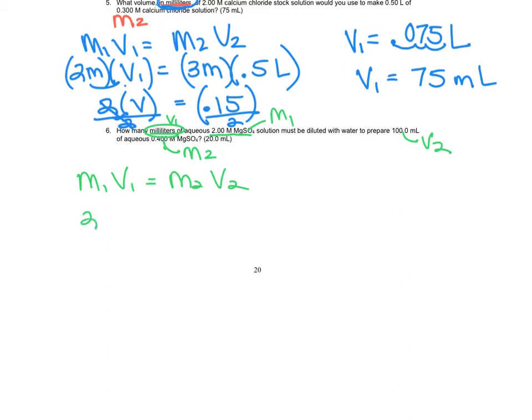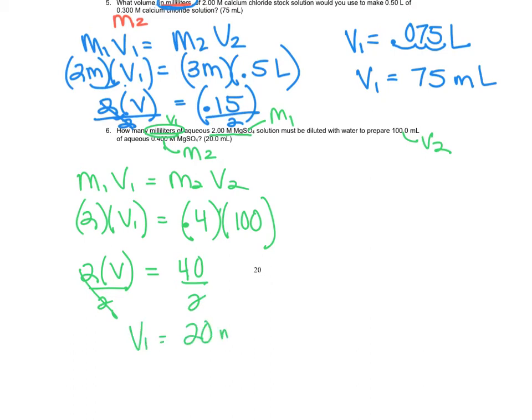Our equation is always M1V1 equals M2V2, and now we plug and chug. Molarity one is two, volume is what we're trying to answer, and then we put in molarity two is 0.4 and volume two is 100 milliliters. So do the multiplication on each side: two times V equals 40. Okay, divide each side by two.